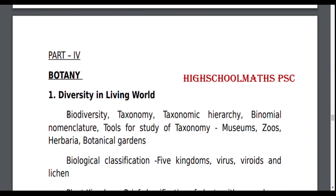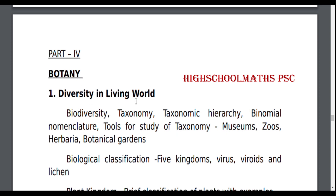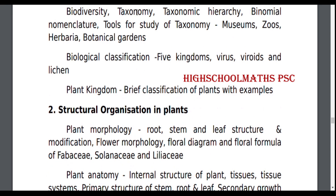Part 4 Biology. Part 5 Diversity in Living World: Biodiversity, Taxonomy, Taxonomic Hierarchy, Binomial Nomenclature. Tools for Study of Taxonomy: Museum, Zoological Parks, Herbarium, Botanical Gardens. Biological Classification: Five Kingdoms, Virus, Viroids and Lichen. Plant Kingdom — Brief Classification of Plants with Examples.